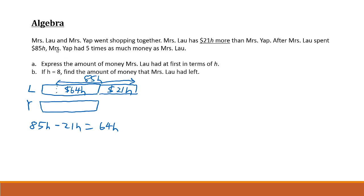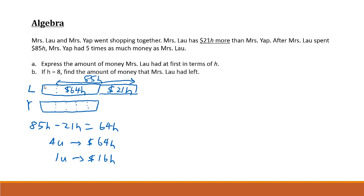In the end, Mrs. Yap has five times as much money as Mrs. Lao. Mrs. Yap's bar needs to be cut into five equal units. So one, two, three, four, five — these four units represent 64h. Therefore, one unit represents 64h divided by 4, which is 16h. So five units will be 16h times 5, which is 80h.